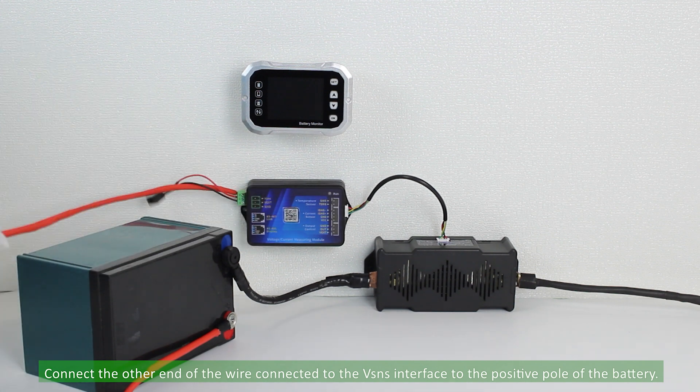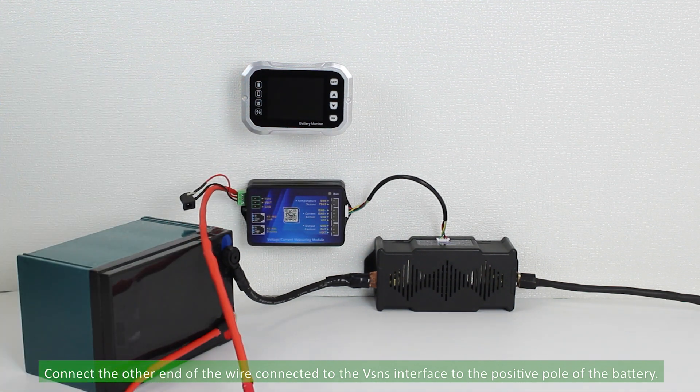Connect the other end of the wire connected to the VSNS interface to the positive pole of the battery.